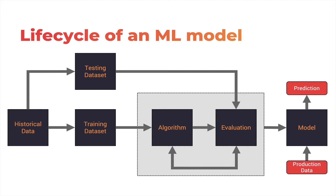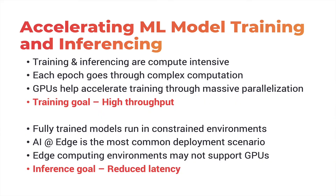During the second phase where we are using the model, this is called inferencing. Those are the two lives: training and inferencing. Now for both these phases or processes, we need massive computing power.